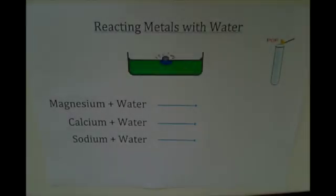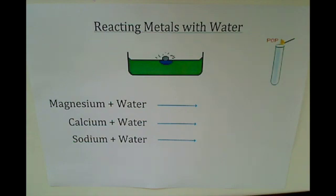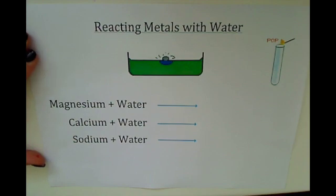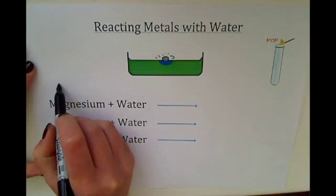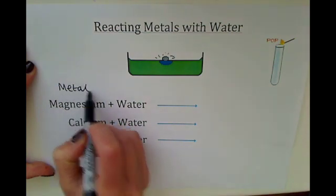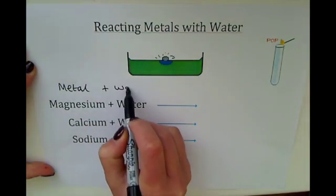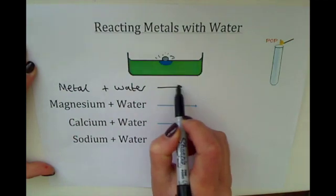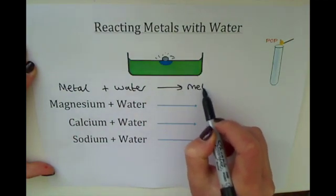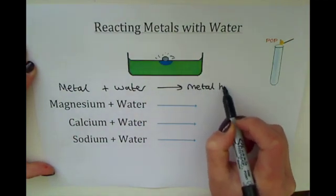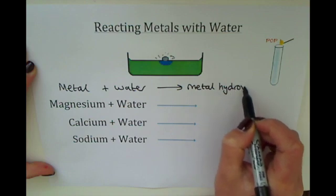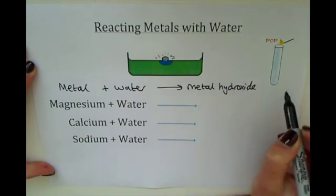This video is about reacting metals with water. The general equation for reacting metals with water is metal plus water makes a metal hydroxide plus hydrogen.